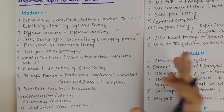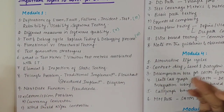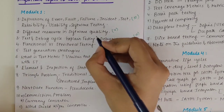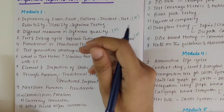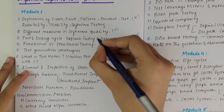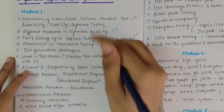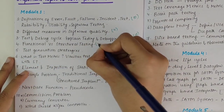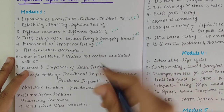Then we have functional versus structural testing — black box, white box testing, and differences. We need to explain the differences with a Venn diagram. This could again be asked for 10 marks.